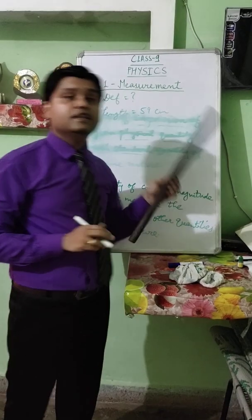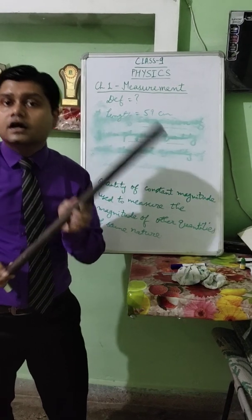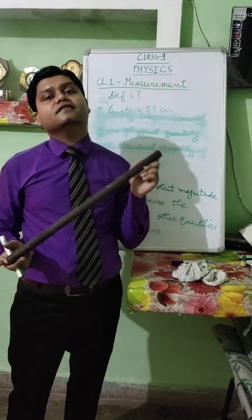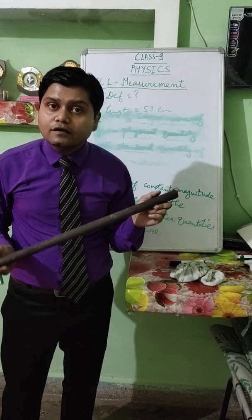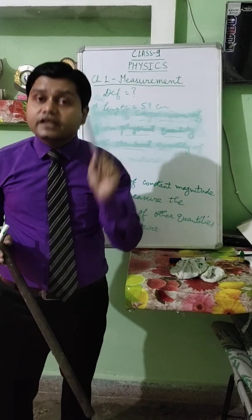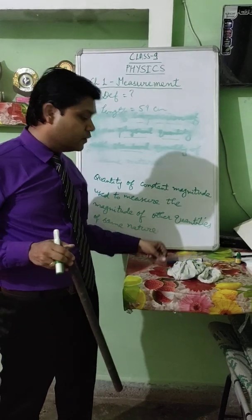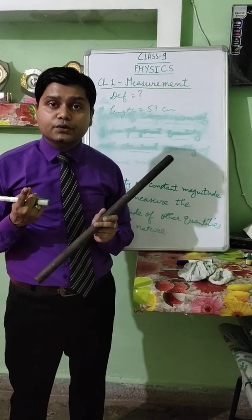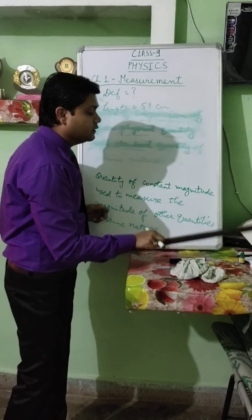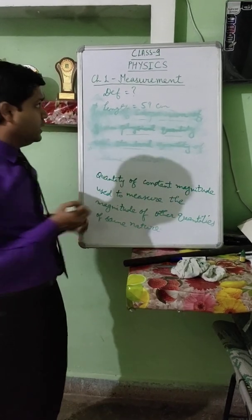Now, if you take this stick to be measured — whether in Datia, Dabra, Gwalior, Delhi, or anywhere in the world — it will be equal to 59 centimetres only, because they have chosen this standard scale. Therefore, this process was developed: in order to have only one value throughout the world, we use a standard system of units. There are a number of systems: the CGS system, the FPS system, and the SI system of units.